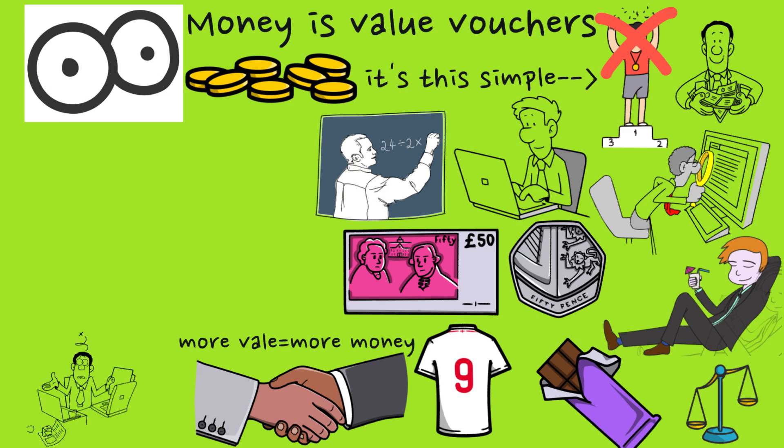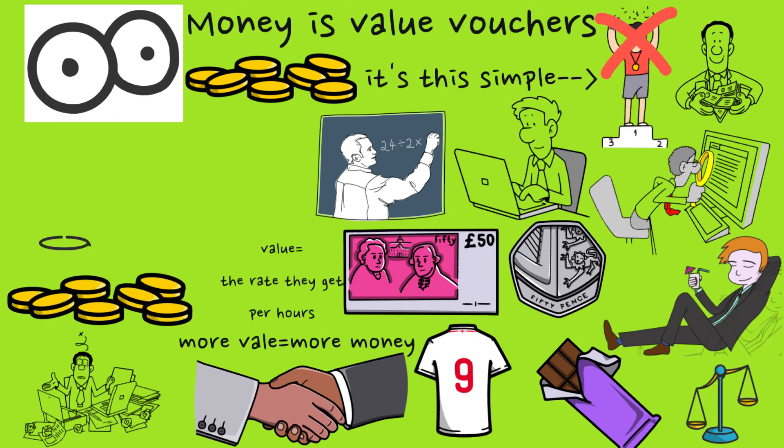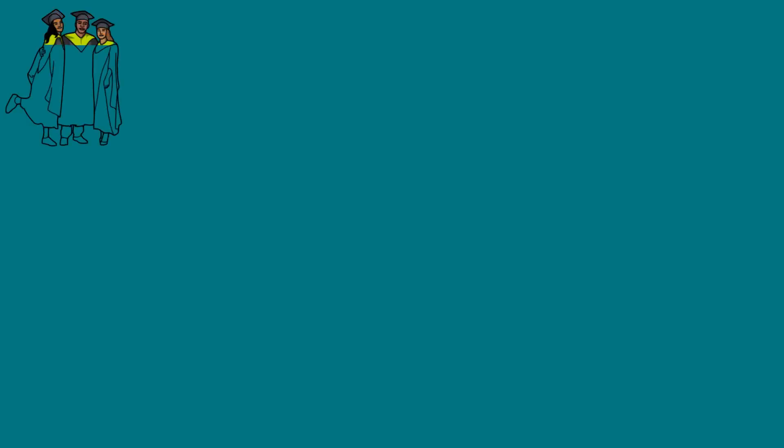Think of a nine-to-five worker - their value is priced at the rate they get per hour. Now think of top university degrees like lawyers - they get more on average than a worse degree. It works in all aspects.